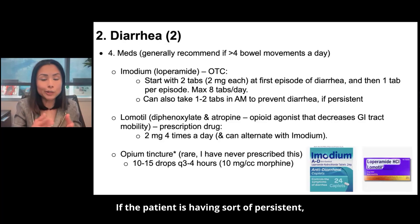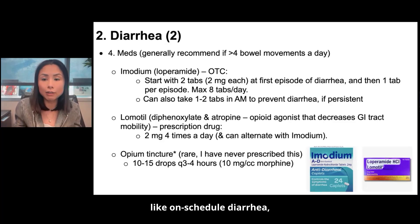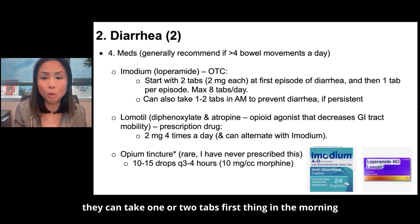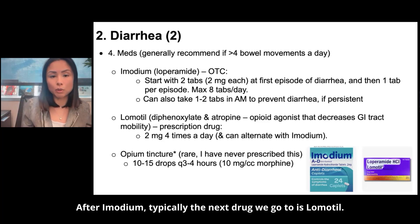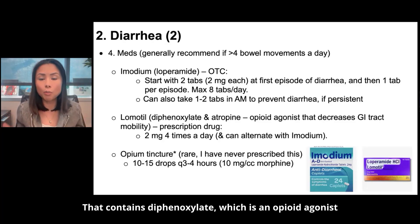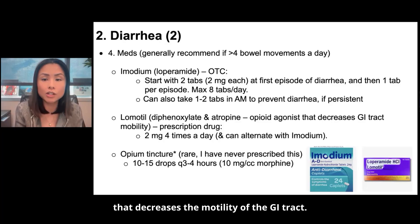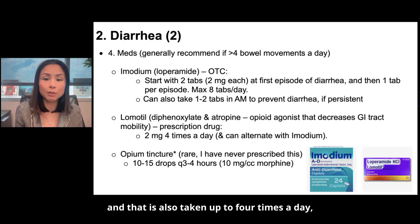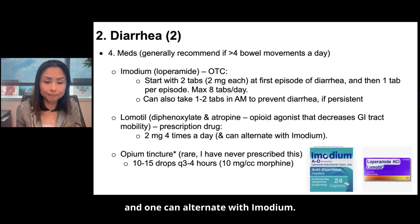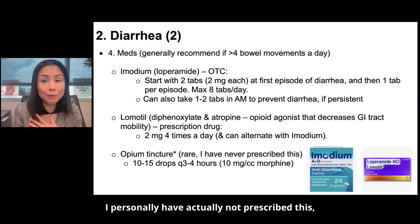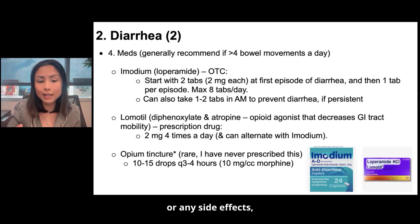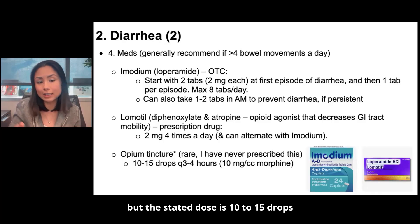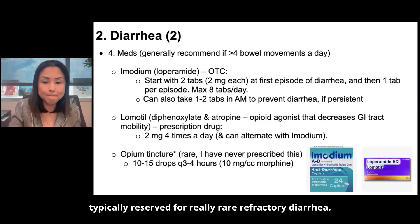If the patient is having persistent, on-schedule diarrhea, they can take one or two tabs first thing in the morning to try to prevent that. After Imodium, the next drug we go to is Lomotil, which contains diphenoxylate — an opioid agonist that decreases motility of the GI tract. That's a prescription drug, taken up to four times a day, and one can alternate with Imodium. Tincture of opium, at 10 to 15 drops every three to four hours, is typically reserved for really rare refractory diarrhea.